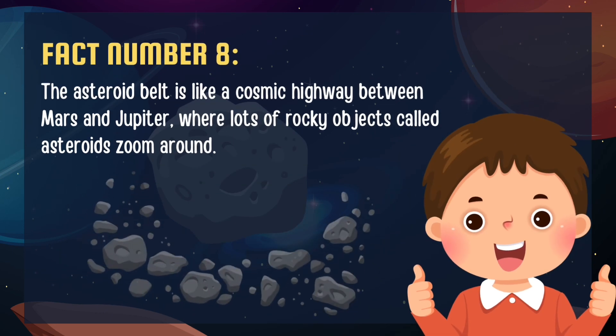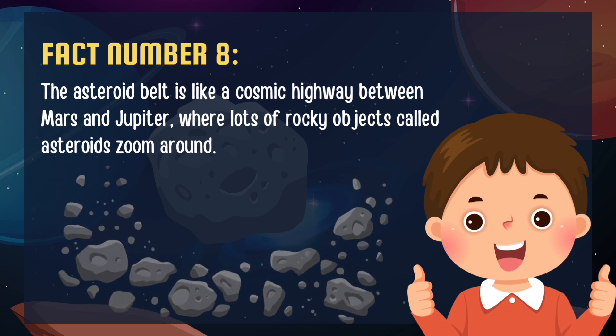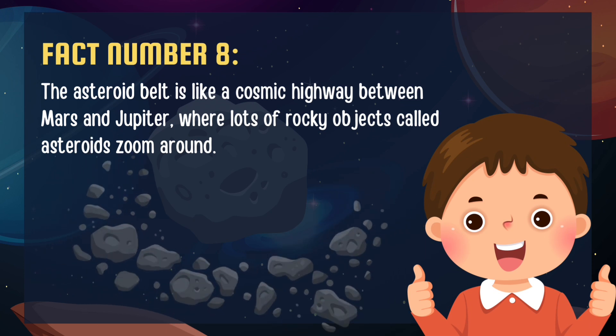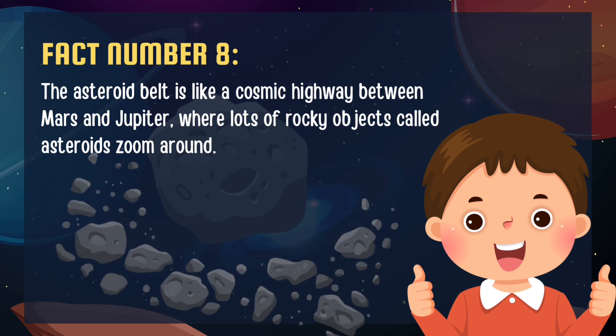At number 8, we have the asteroid belt. It's like a cosmic highway between Mars and Jupiter where lots of rocky objects called asteroids zoom around.